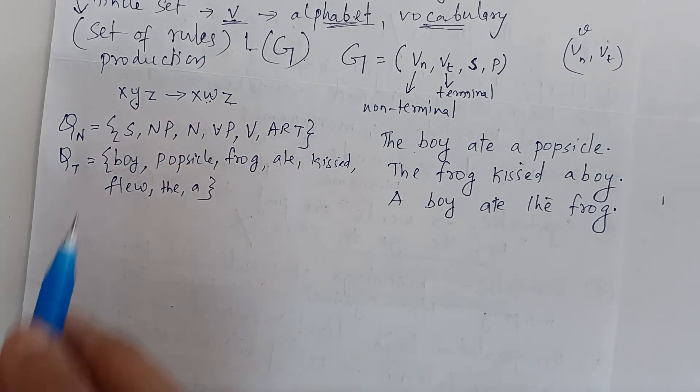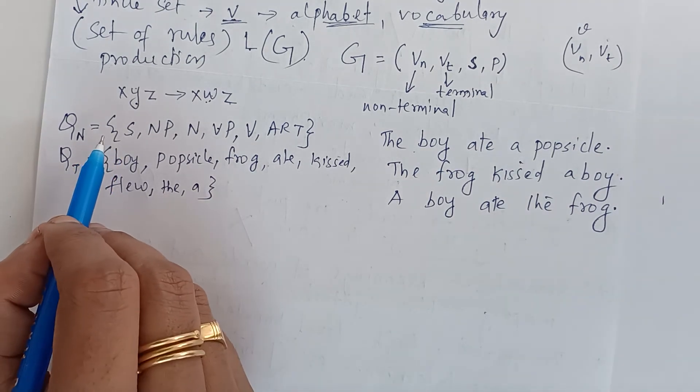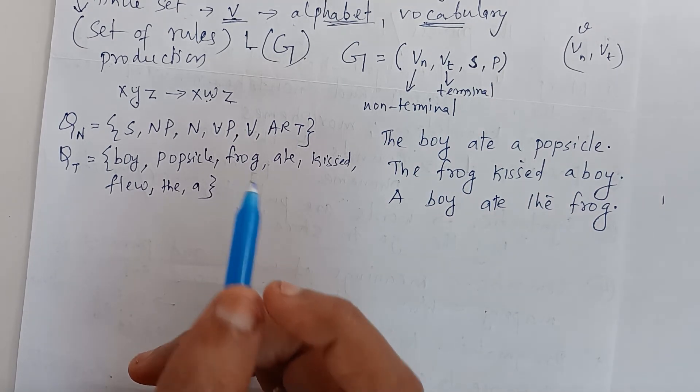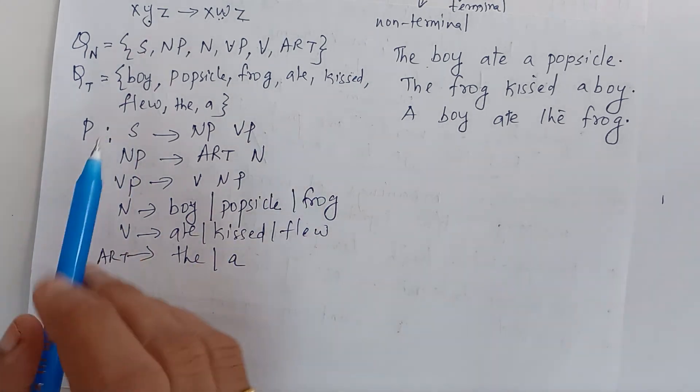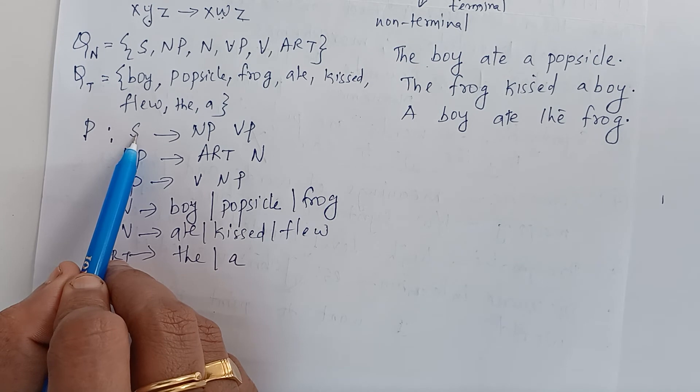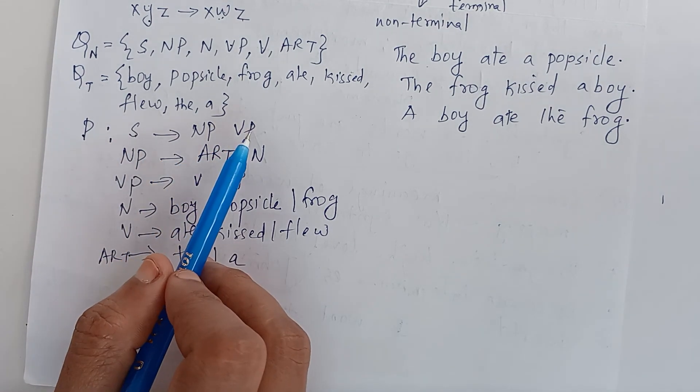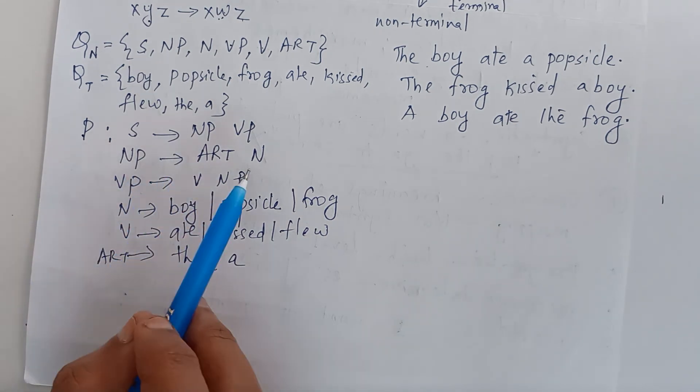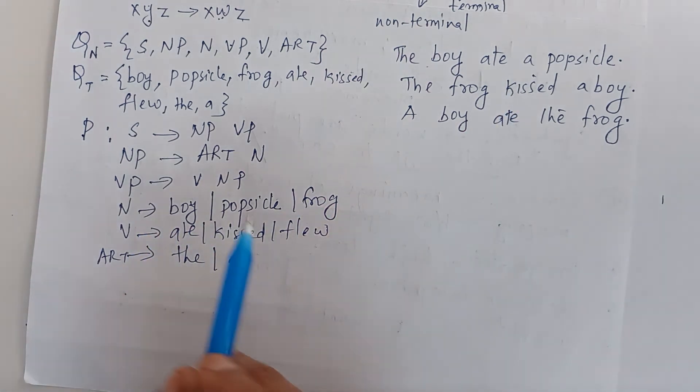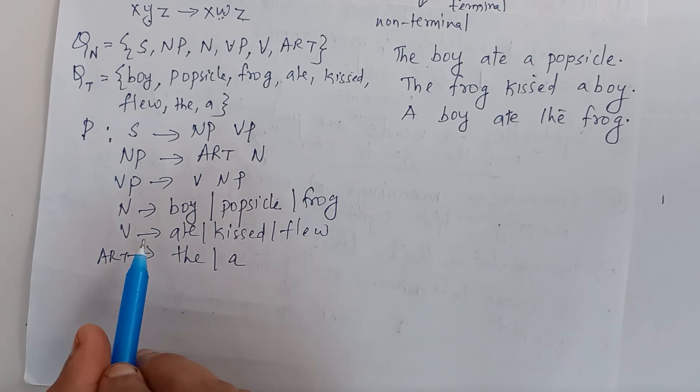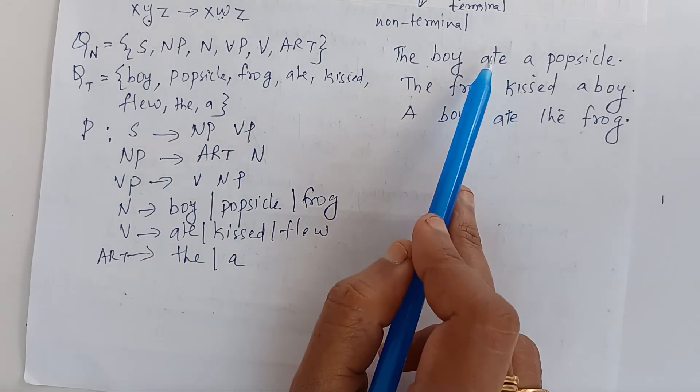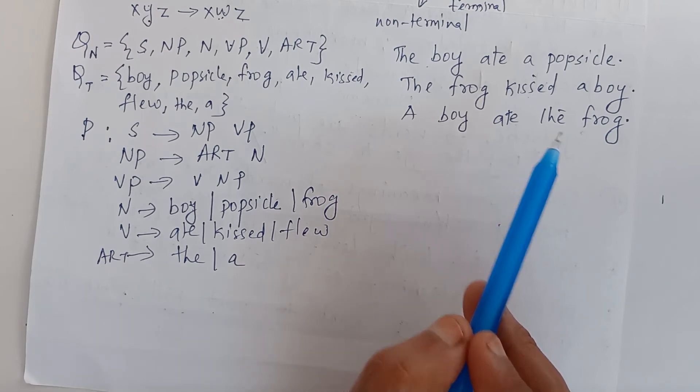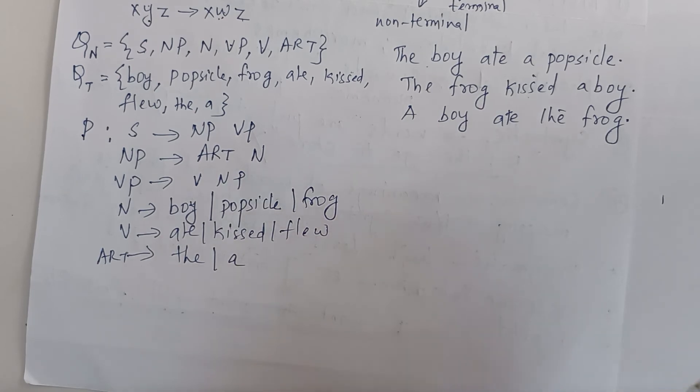Production rules P: S is the initial symbol for the sentence. The rules are: S goes to noun phrase verb phrase. Noun phrase goes to article noun. Noun can be boy, popsicle, frog. Verb phrase goes to verb noun phrase. Verb relates to ate, kissed, and flew. And article is the or A.